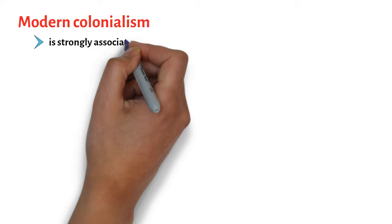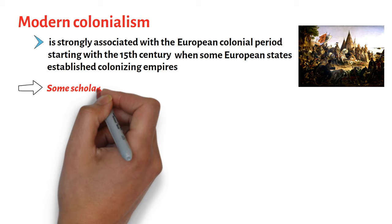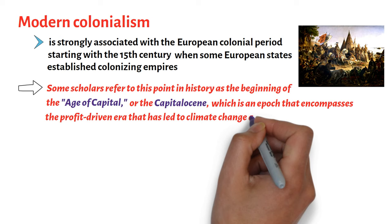Modern colonialism is strongly associated with the European colonial period starting with the 15th century, when some European states established colonizing empires. Some scholars refer to this point in history as the beginning of the Age of Capital, or the Capitalocene, which is an epoch that encompasses the profit-driven era that has led to climate change and global land change.